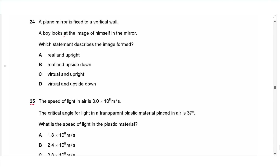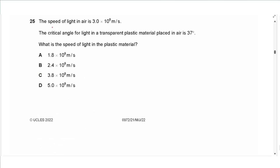Question 24: A plane mirror is fixed to a vertical wall and a boy looks at his image. The image formed in a plane mirror is always virtual and upright. The answer is C.